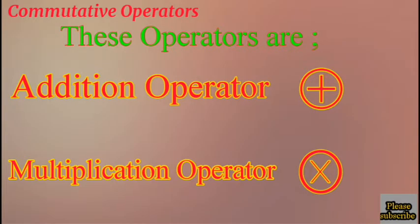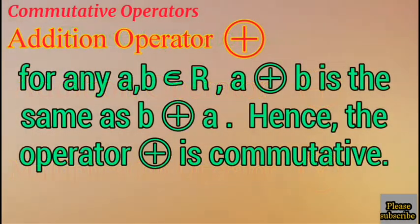We will be looking at the operators that are commutative. We have the addition operator and the multiplication operator. For the addition operator, we have that for any two elements A and B taken from the set of real numbers, A plus B is the same as B plus A. Then, we have that the operator addition is commutative.